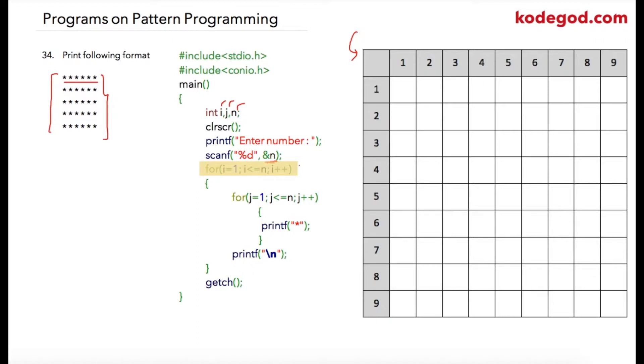The first for loop I am using for iterating rows, and the next for loop is for iterating columns. So now let us see how the compiler will be executing these instructions. So initially I am initializing i equal to 1.